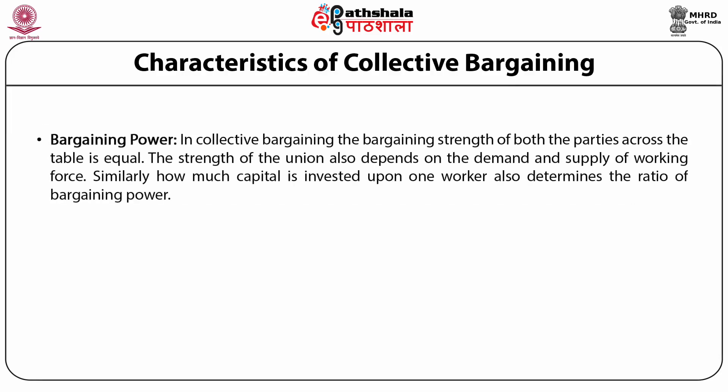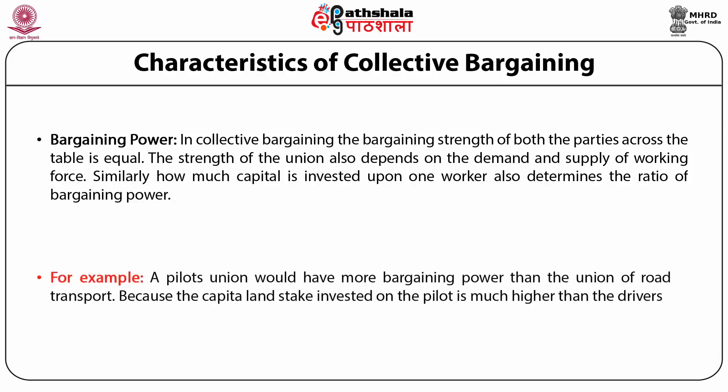Second, bargaining power. In collective bargaining, the bargaining strength of both parties across the table is equal. The strength of the union also depends on the demand and supply of the working force. Similarly, how much capital is invested per worker also determines the ratio of bargaining power. For example, a pilot's union would have more bargaining power than the union of road transport workers, because the capital, land and stake invested in a pilot is much higher than for drivers.